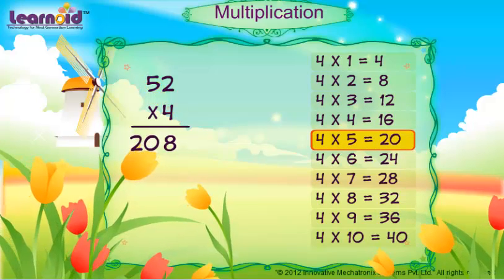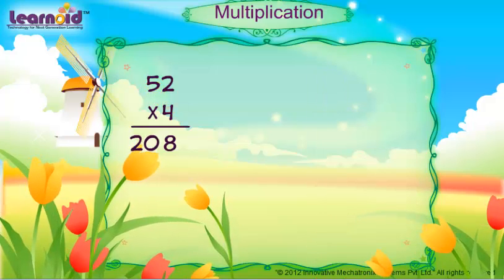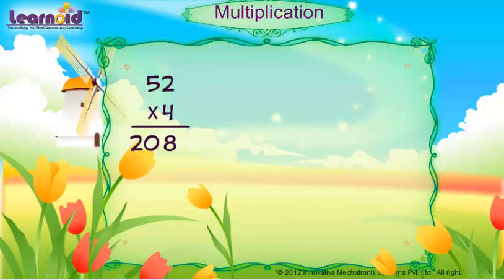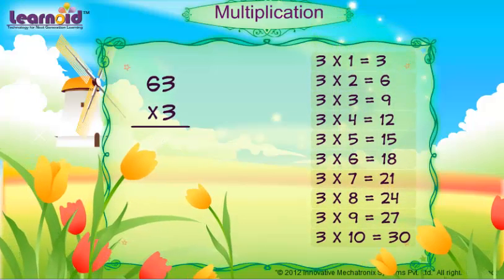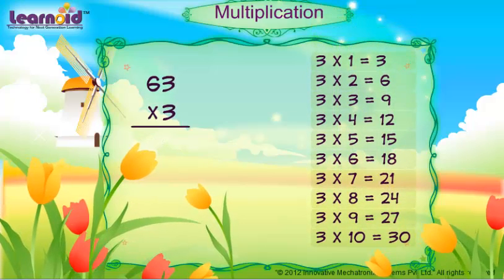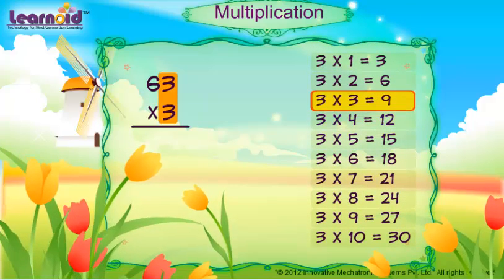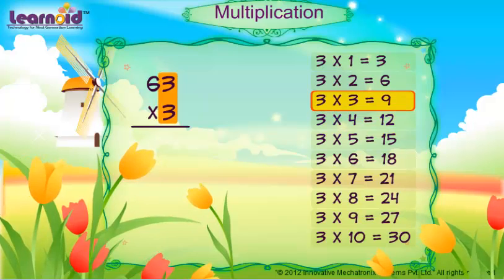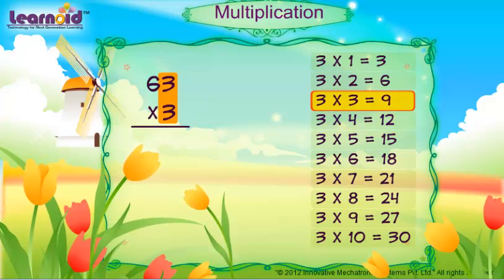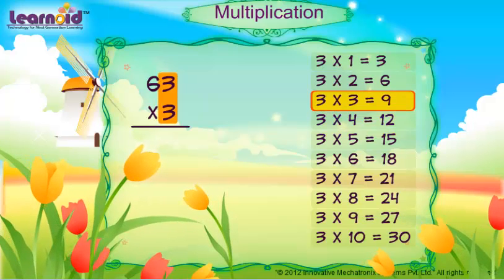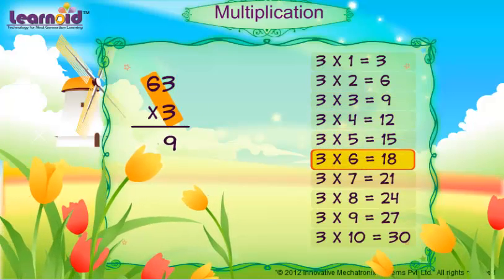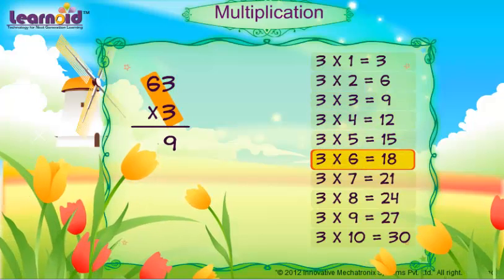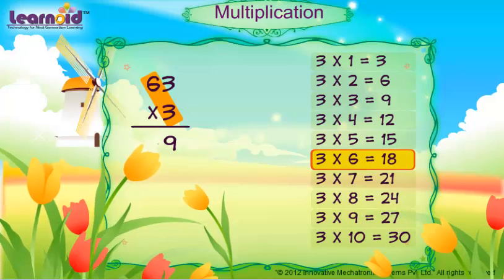Answer is 208. Let's do one more example. Multiply 63 with 3. 3 into 3 is 9. Write 9. 3 into 6 is 18.